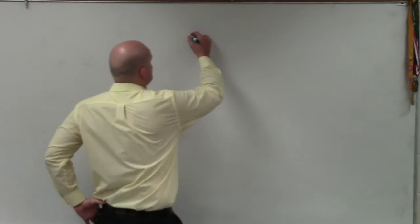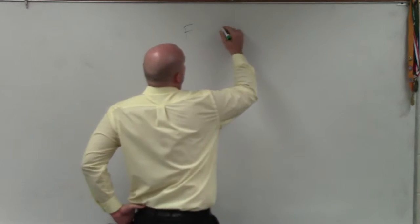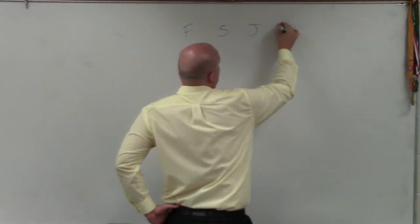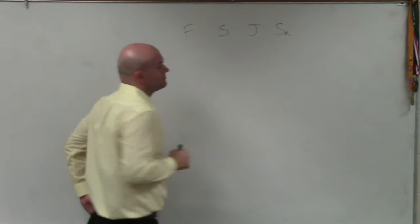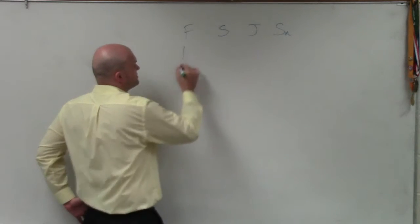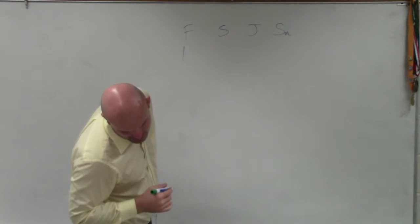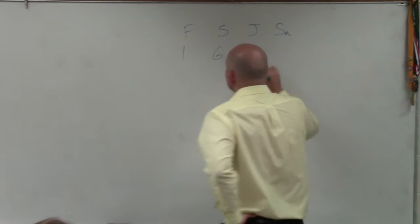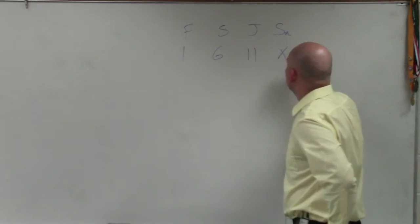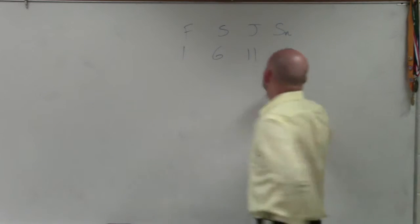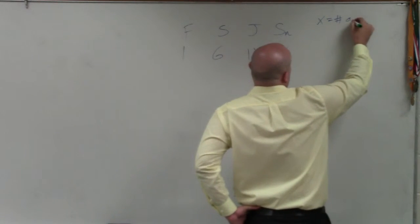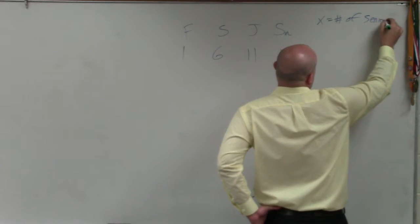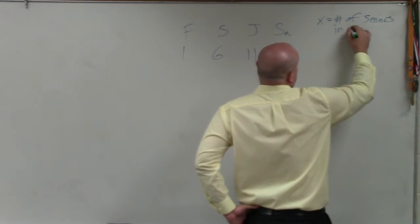So we know there's one freshman. I'm just going to do freshman, sophomores, juniors, and seniors. There's one freshman, six sophomores, eleven juniors, and then we don't know x. So I'm going to say x equals the number of seniors in the musical.